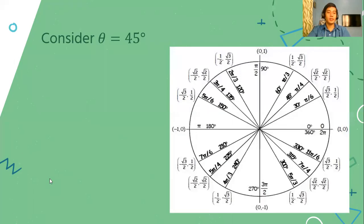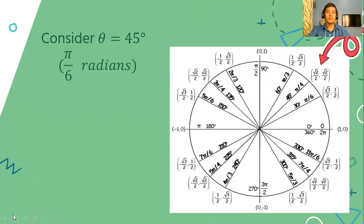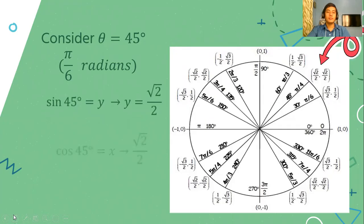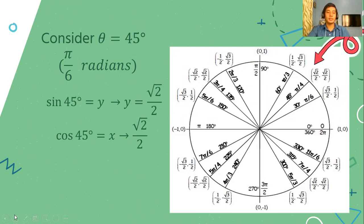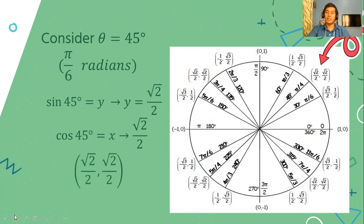For the cosine and sine of 45 degrees, we have no problem because the answers are already reflected given the trigonometric point.